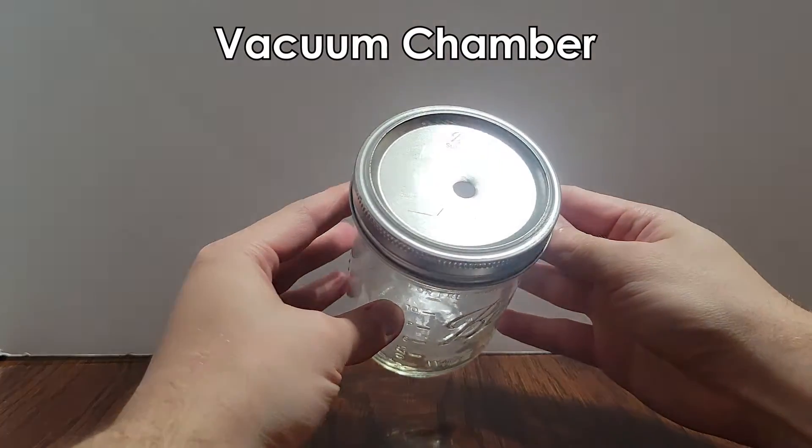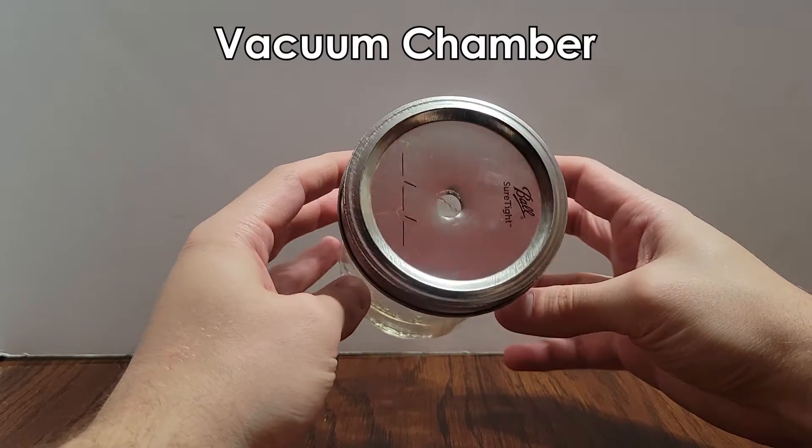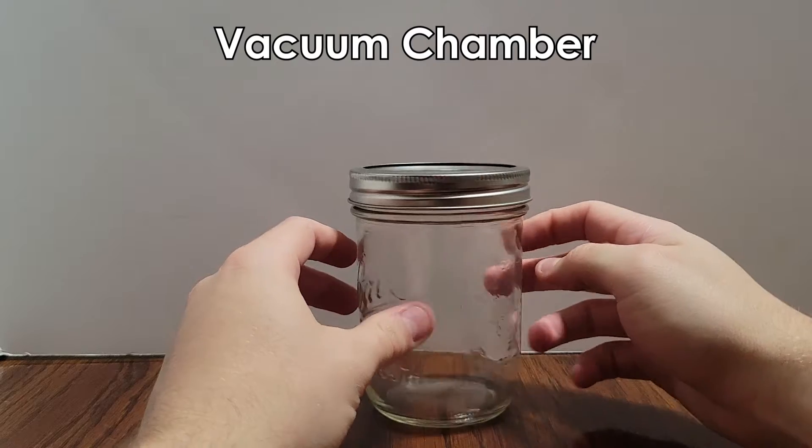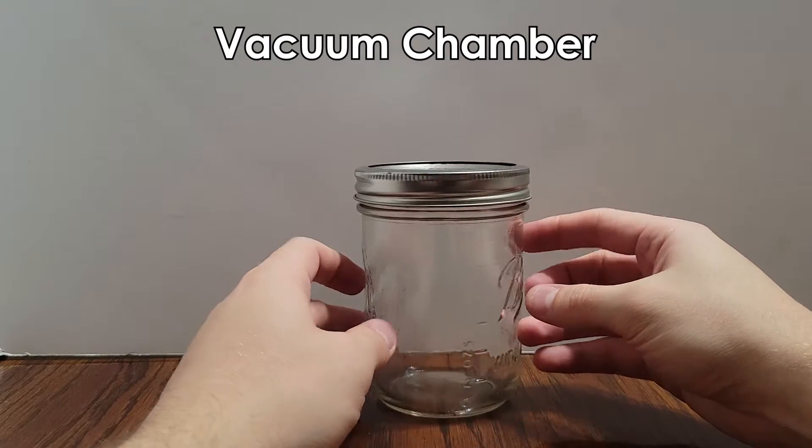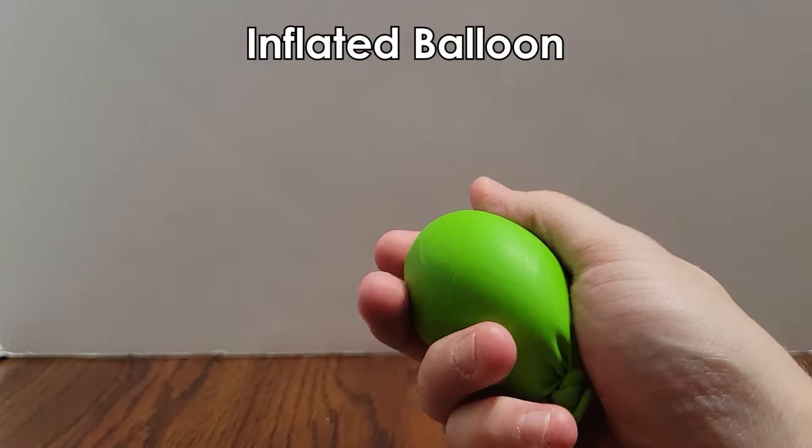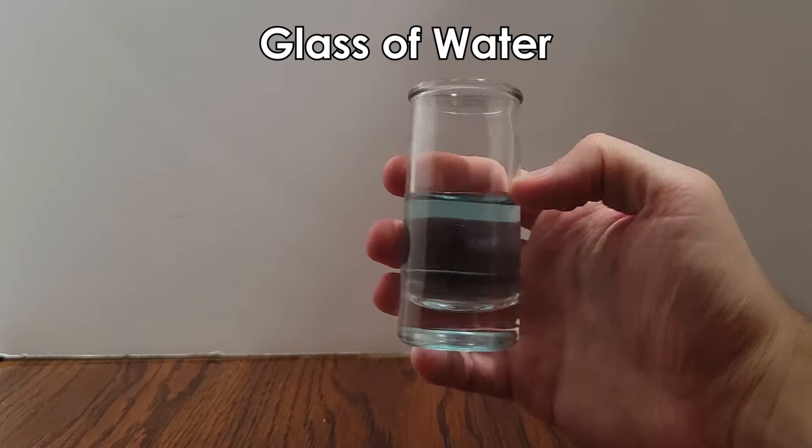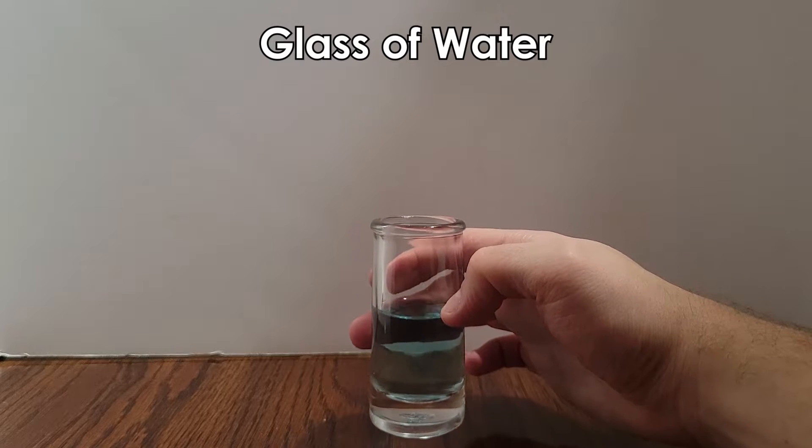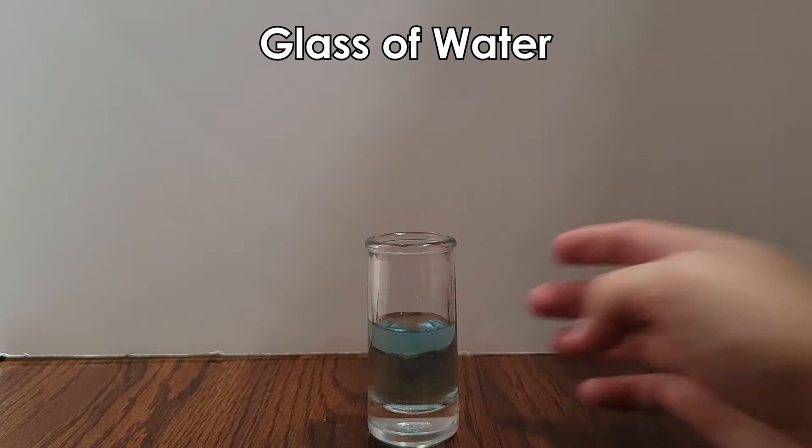To perform some demonstrations with your pump you'll need a few additional supplies including one, a vacuum chamber. This could be a bell jar or a vacuum flask that you buy for this purpose, or it could be made like you see here out of a simple mason jar with its lid drilled out to fit your tubing. Two, an inflated balloon and three, a small glass of water that'll fit inside your vacuum chamber. Feel free to dye your water so you can see it better during your demonstration.